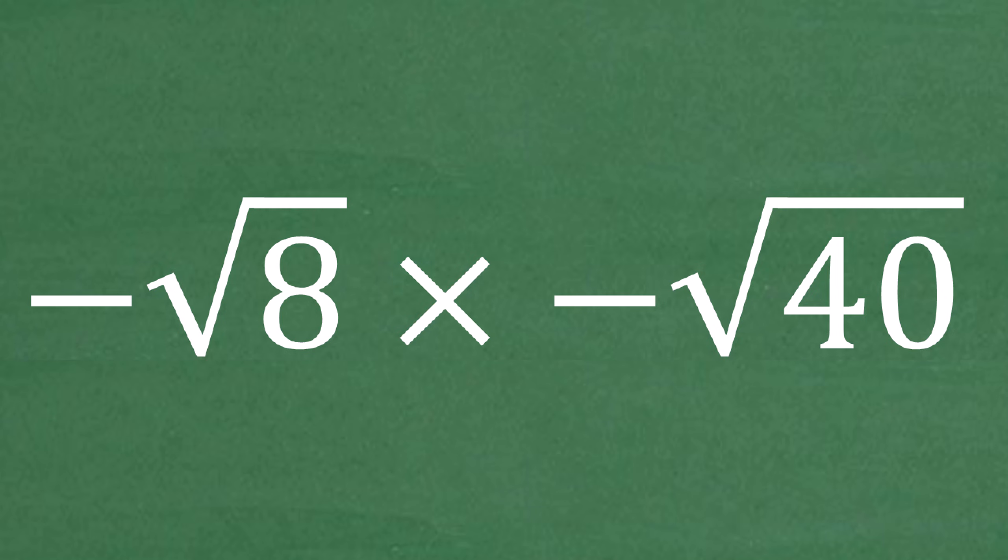If you're learning algebra within a math course, this is something you definitely need to know, to be able to handle a problem like this without the aid of a calculator. So we have a negative square root times another negative square root. How do we simplify this?